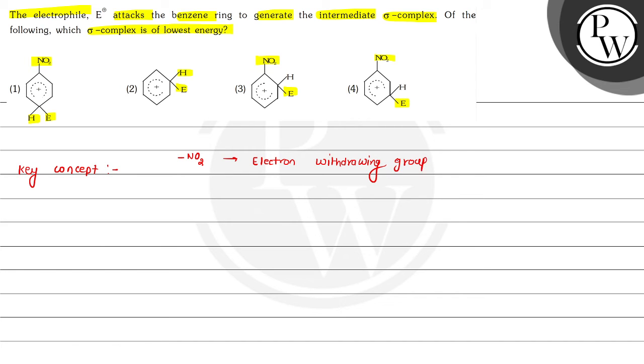So this electron withdrawing group will destabilize the stability of complex.